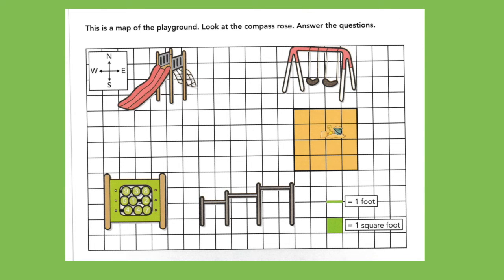Turn your math paper over and you'll see this map on the back. It says this is a map of the playground. Look at the compass rose. Answer the questions. Here's the compass rose. And then also, here's the scale. One line equals one foot and each box equals one square foot.